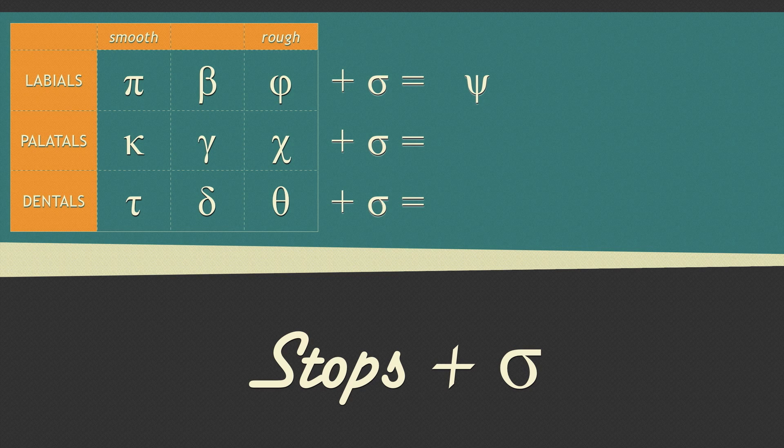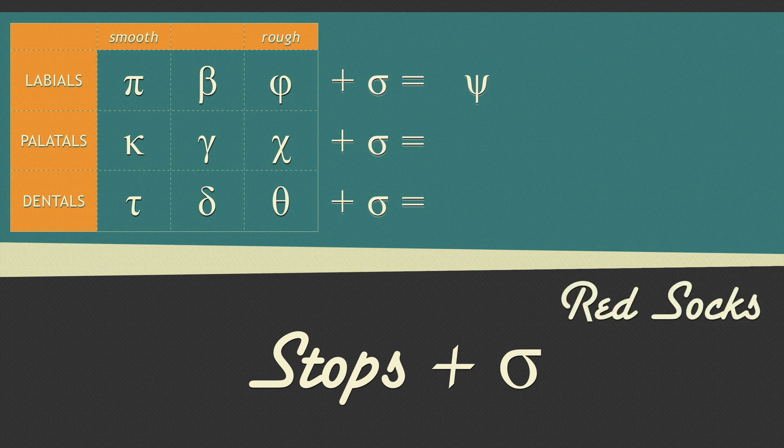We kind of do this in English already too, particularly with shorthand. The baseball team is called the Boston Red Sox, but it is spelled with an x because cks and x make the same sound. So any labial followed by a sigma equals psi.